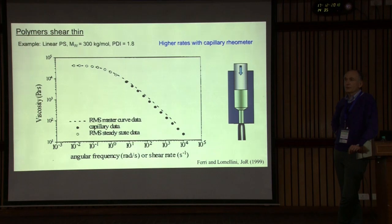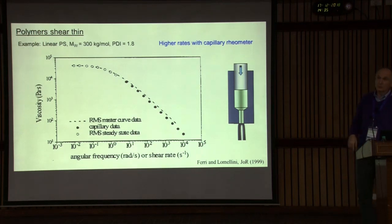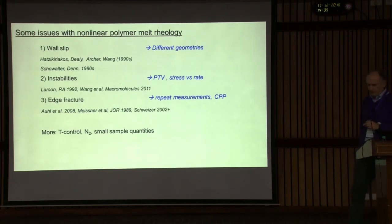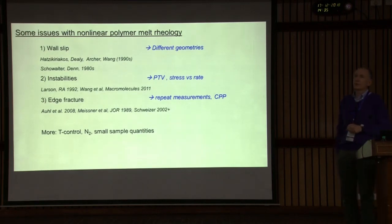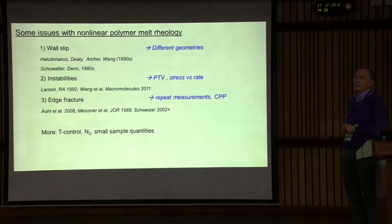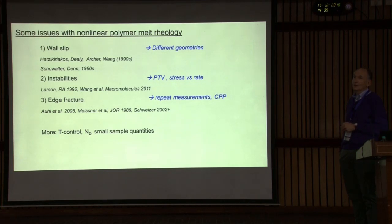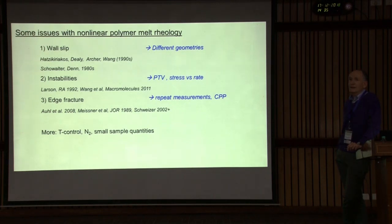A capillary rheometer gives you only an apparent viscosity; you would not be able to measure normal stresses. There are several complications associated with it when you really want to do constitutive modeling at molecular scale. Which are the issues with rheometric measurements? The most important is wall slip. The way people usually get around it is by measuring with different geometries — when different geometries give you the same results, then you don't worry about slip.